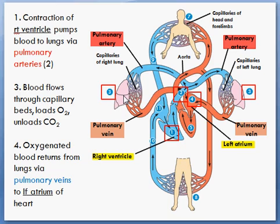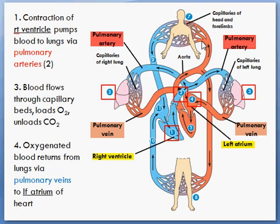So this is the pulmonary circuit. The blood is oxygenated, and the pulmonary veins bring it into the left atrium. It is then pushed down into the left ventricle. It goes through the valves into the left ventricle, then is pumped out through the aorta, one of the largest arteries in your body. The aorta pushes all of this oxygenated blood out to the systemic circuit — to the rest of your body.